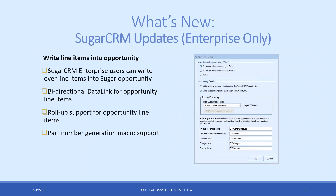For Sugar Enterprise users, you now have the ability to write line items into the Sugar opportunity. We also support bi-directional data links for opportunity line items, rollup support for those line items, and the part number generation macro. This supports up to Sugar 8.3, so you can use it with the latest version.